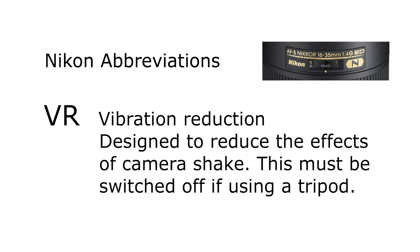There are plenty of generic lenses available for your Nikon camera and they have different abbreviations. Here are the abbreviations that the two largest generic lens manufacturers use — Sigma and Tamron. Take a look through them and I hope that was useful.